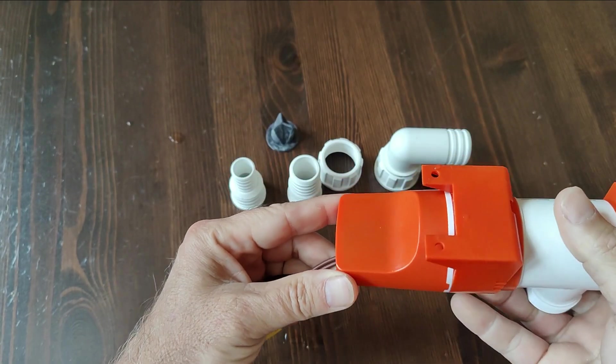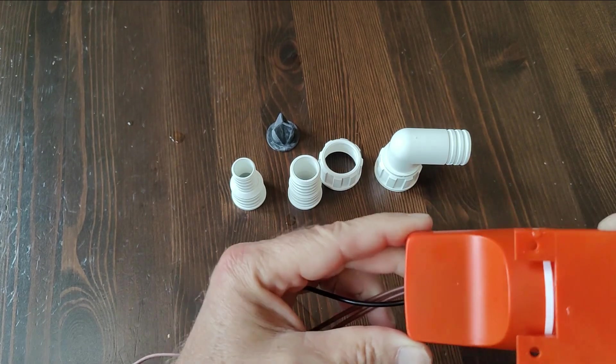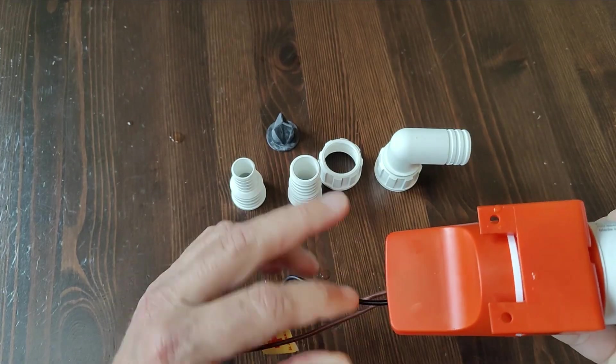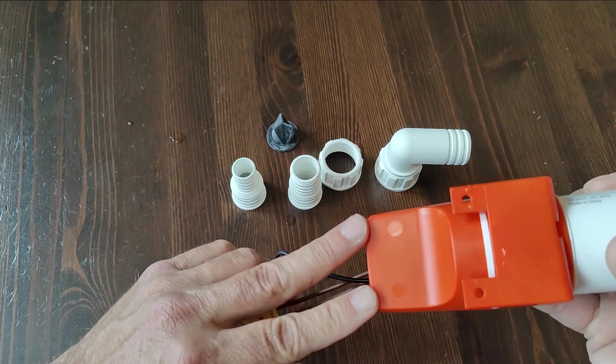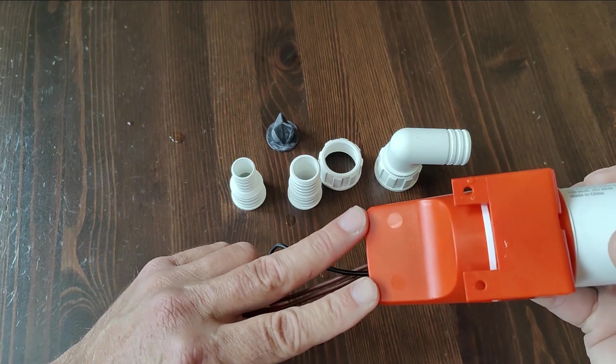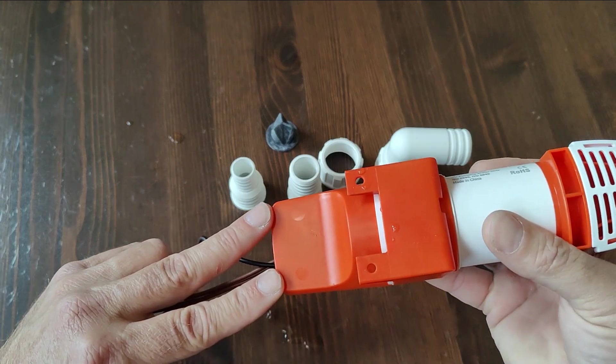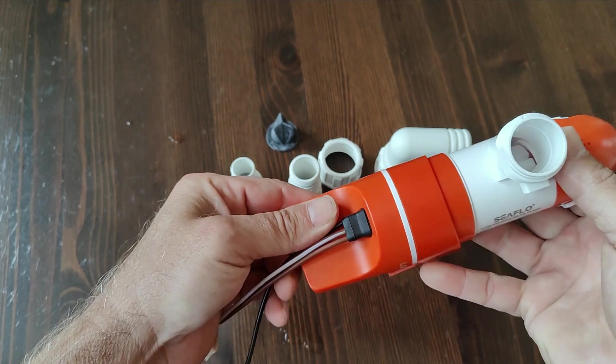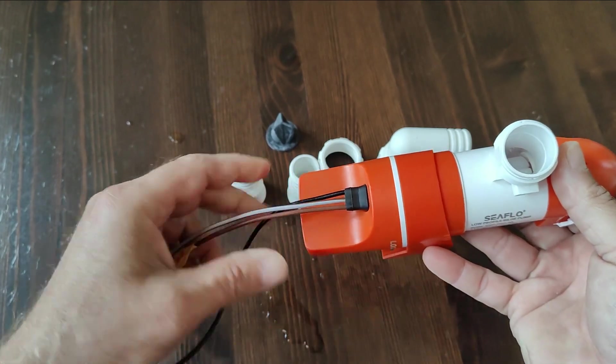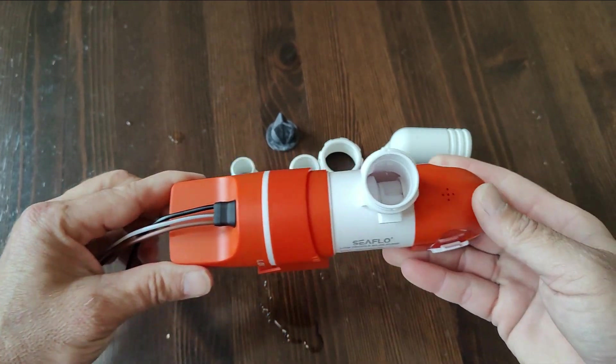The automatic bilge pump works by these two water sensors right here. When both of them are submerged in water, the pump will turn on after a slight delay and then it will run until it can't feel any more water. The purpose of the delay is so that just splashing it doesn't turn it on.